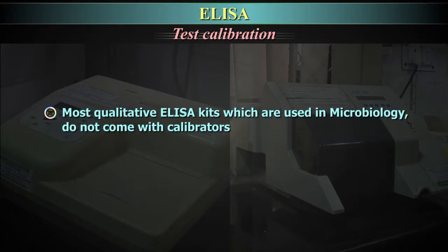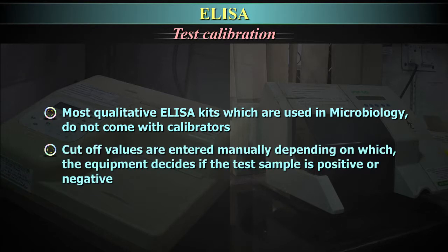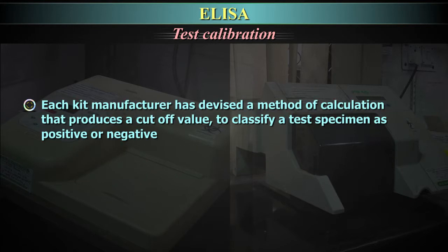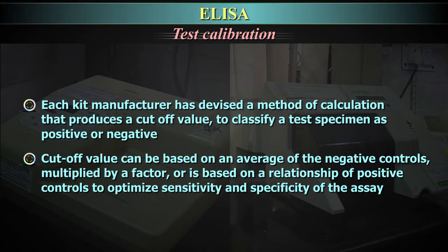Most qualitative ELISA kits used in microbiology do not come with calibrators. Cut-off values are entered manually, depending on which the equipment decides if the test sample is positive or negative. Each kit manufacturer has devised a method of calculation that produces a cut-off value to classify a test specimen as positive or negative. Thus, a cut-off value can be based on an average of the negative controls multiplied by a factor, or is based on a relationship of positive controls to optimize sensitivity and specificity of the assay.